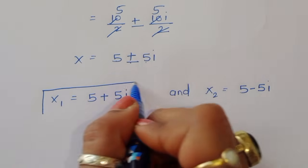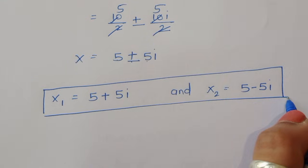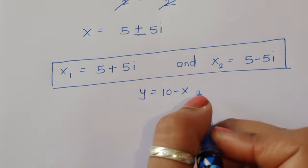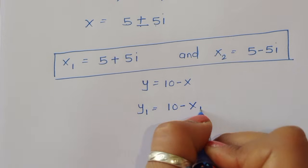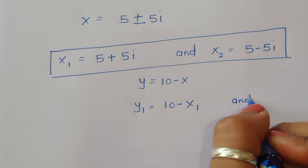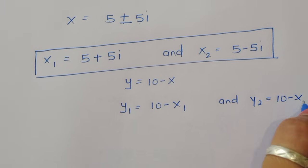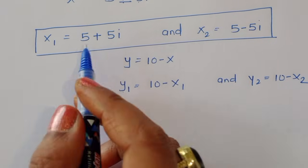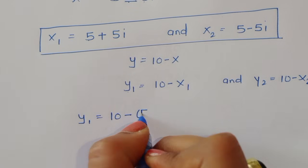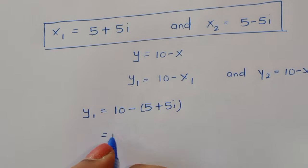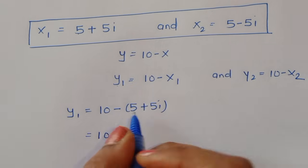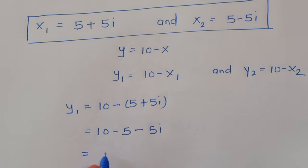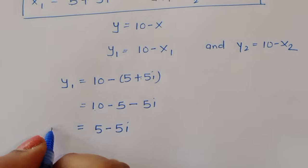Now we find the values of y1 and y2 using equation 3: y is equal to 10 minus x. So y1 is equal to 10 minus x1, which is 10 minus (5 plus 5i), giving y1 equal to 5 minus 5i.